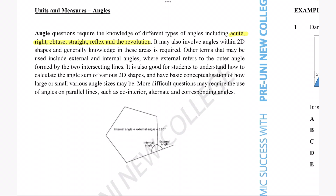It may also involve angles within 2D shapes, and generally knowledge in these areas is also required. Other terms that may be used include external and internal angles, where external refers to the outer angle formed by two intersecting lines. More difficult questions may require the use of angles on parallel lines such as the co-interior, alternate, and corresponding angles.